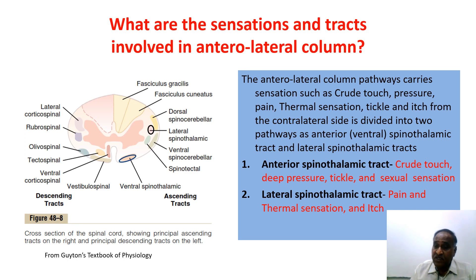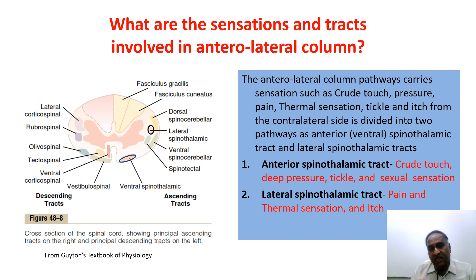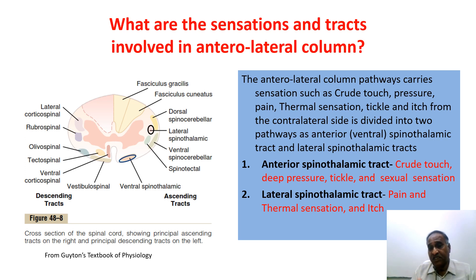The anterolateral column forms two tracts: one ventrally placed, known as the anterior spinothalamic tract, and one laterally placed, the lateral spinothalamic tract. The anterior spinothalamic tract transmits crude touch, deep pressure, tickle, and sexual sensation. The lateral spinothalamic tract transmits pain and thermal sensation, which have two components I will deal with separately.